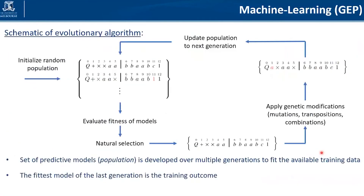How do we evolve this over time? We start with some kind of random population — we don't impose any specific functional form initially, we just pick a random population of different individuals. We then evaluate the fitness of each model, pick the best ones through natural selection, combine them, and apply genetic modifications to get an updated set of individuals. We update the whole population and keep going in this loop, and hopefully the fitness of these models improves over generations. The fittest model of the last generation is the training outcome — the best model we're going to use.